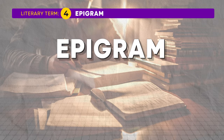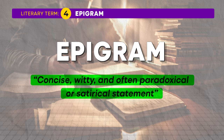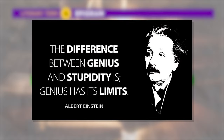Then we have epigram, which is very similar sounding, so be very clear with the meanings and definitions. An epigram is a concise, witty, and often paradoxical or satirical statement. It's a form of poetry or prose that typically consists of a brief and clever expression conveying a thought or observation. Epigrams are known for their conciseness and clever use of language. Albert Einstein's quote — 'The difference between genius and stupidity is that genius has limits' — is a well-known epigram.